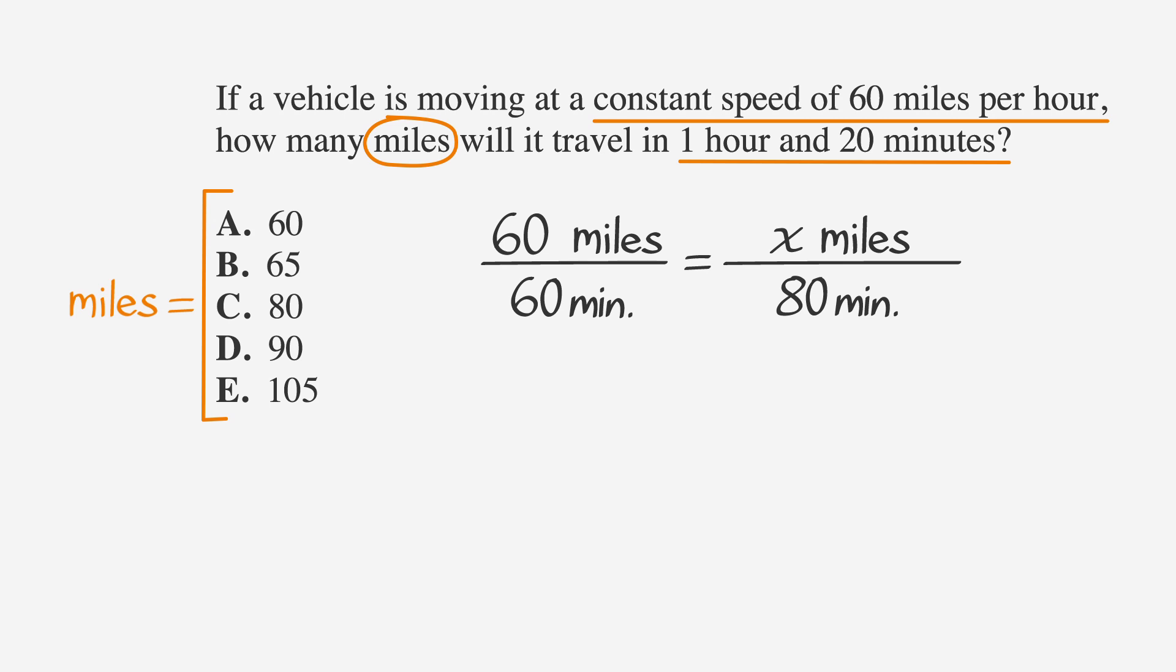Now we have an equation that we can solve by cross-multiplying. 60 times 80 equals 60x. Drop the units of measure to make things easier. If we divide each side by 60, we find that x equals 80, which is choice C.